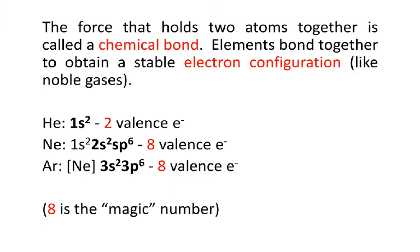So helium's electron configuration is 1s2. If you remember, the first energy level only has an s orbital. You put two electrons in it, you've filled it up. So it's now got a full valence shell with two valence electrons.